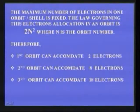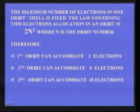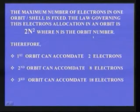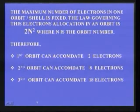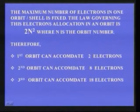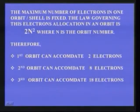The maximum number of electrons in one orbit or shell is fixed. The law governing electron allocation in an orbit is 2n², where n is the orbit number. If you apply this formula, the first orbit can accommodate 2 electrons (2×1² = 2). For the second orbit we get 8 electrons, and similarly the third orbit can accommodate 18 electrons.